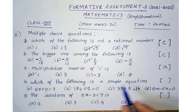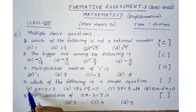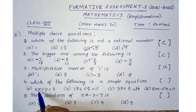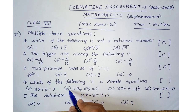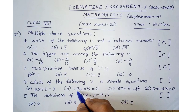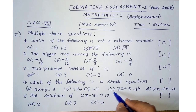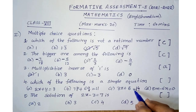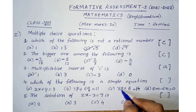Fourth one: which of the following is a simple equation? A simple equation must have only one variable. Option A has 2x + y — two variables x and y, so it's wrong. Option B has 7p + 6q = 11 — two variables p and q, also wrong. Option C has 3x + 5 = 14 — only one variable x. So option C is the simple equation. Answer is option C.